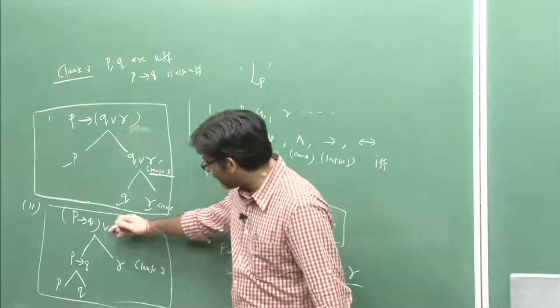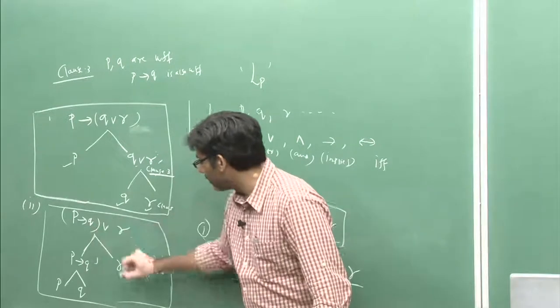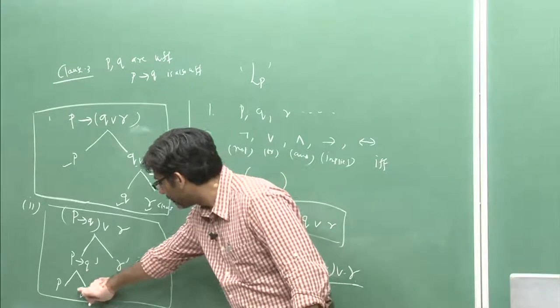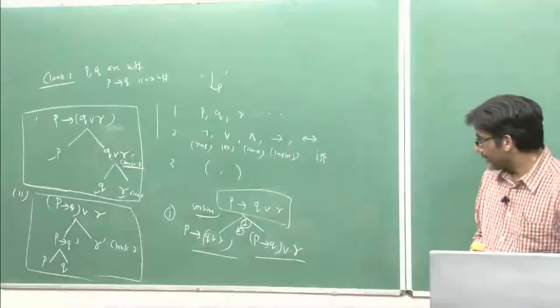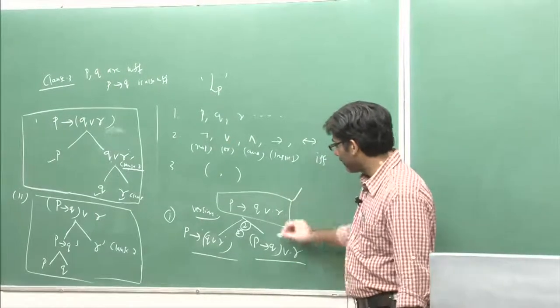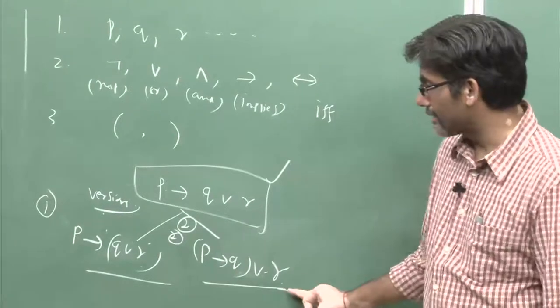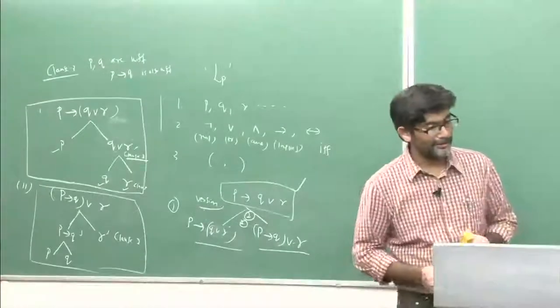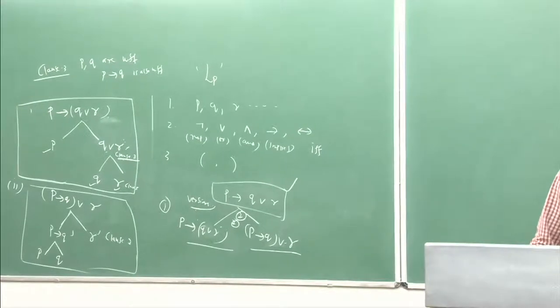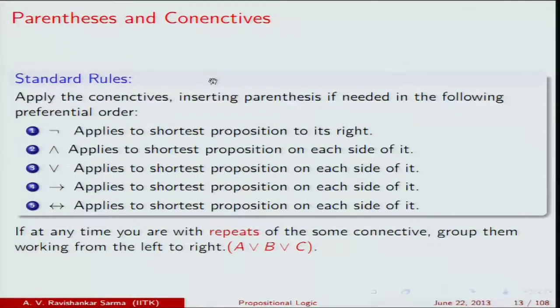So with tree structures, you can also determine how to read a formula. Every well-formed formula has a unique tree structure, and no two distinct formulas share the same tree structure. The confusion that arises when writing 'p implies q or r' without parentheses is resolved by using conventions about how to insert parentheses.